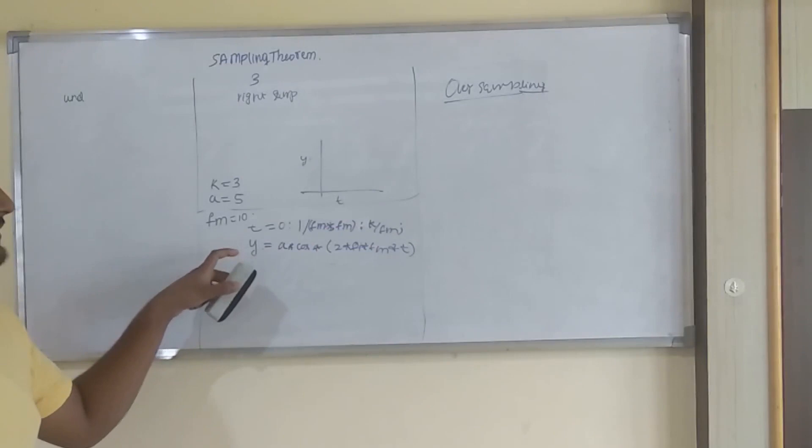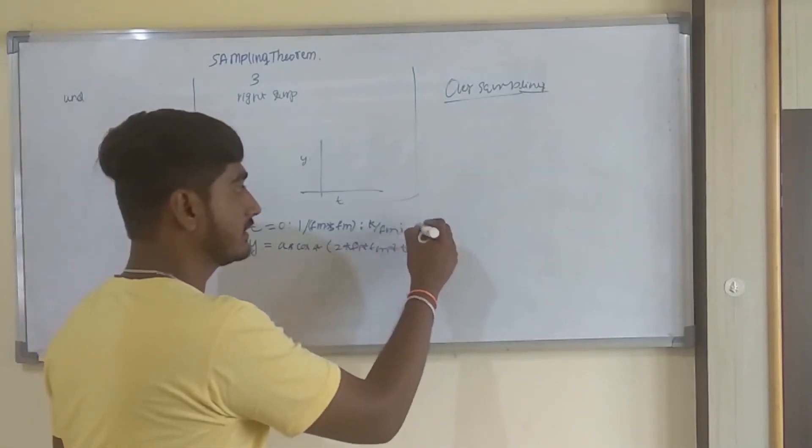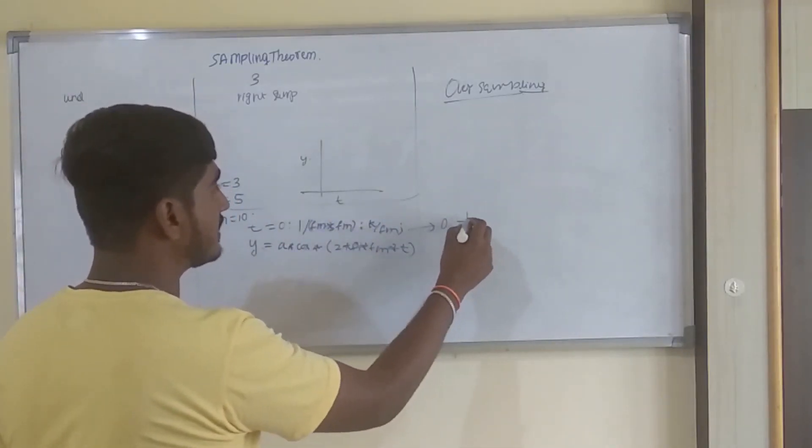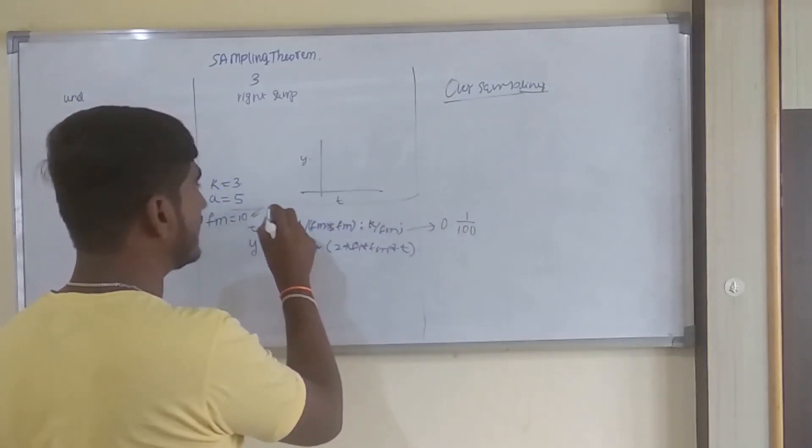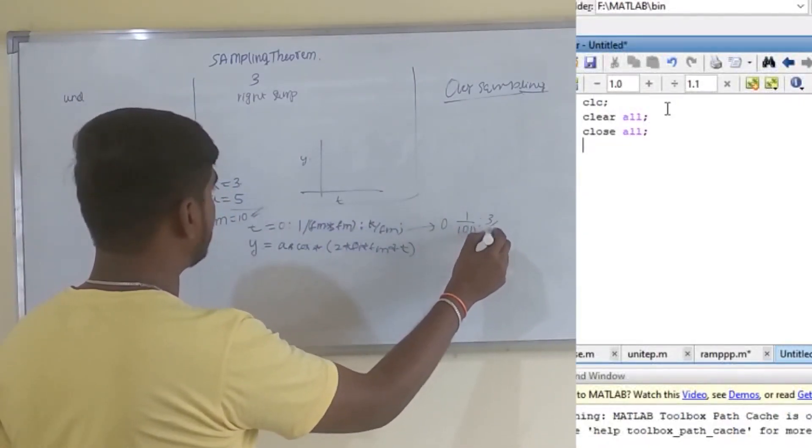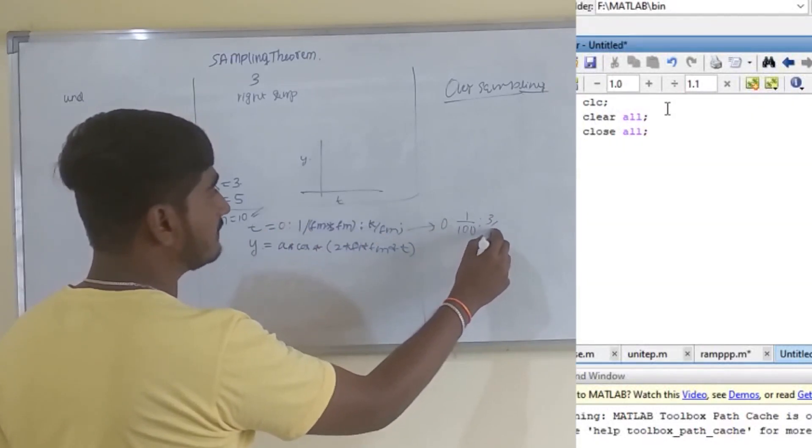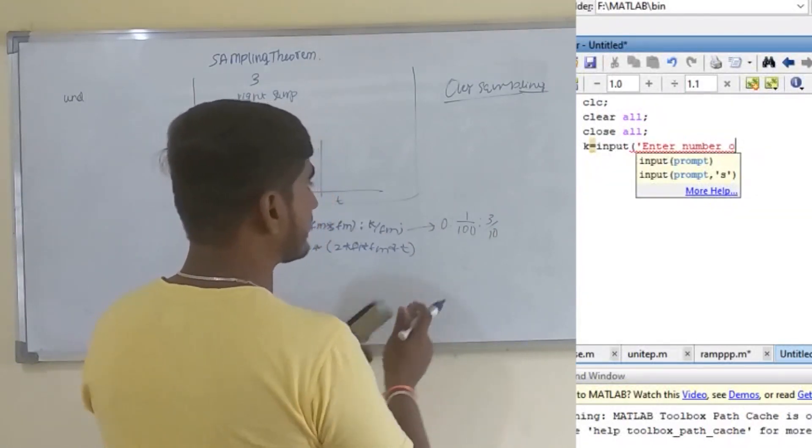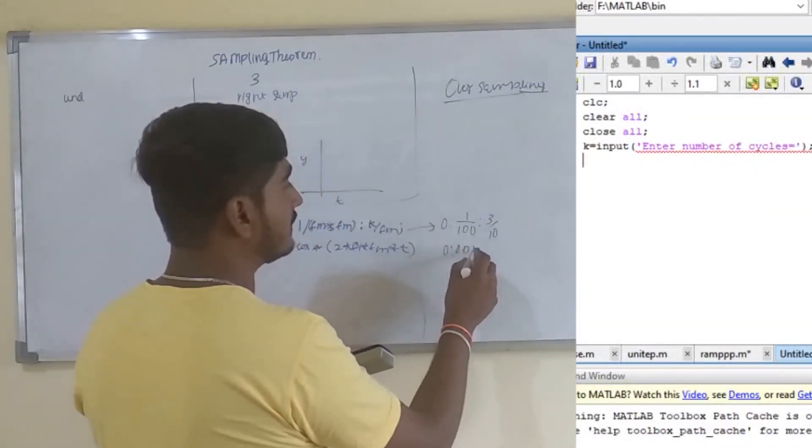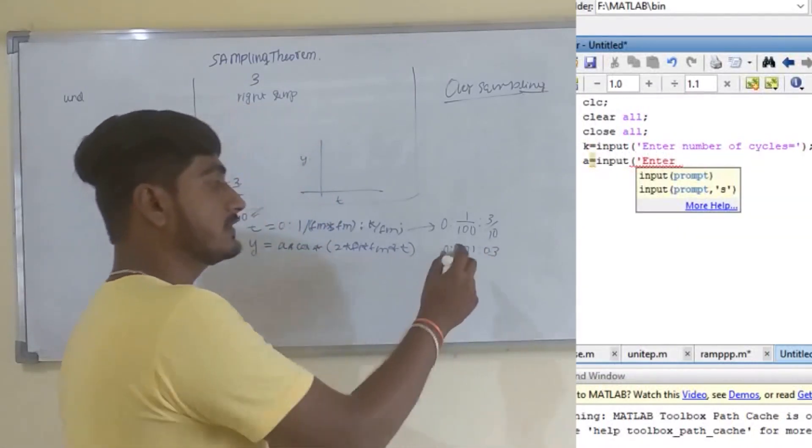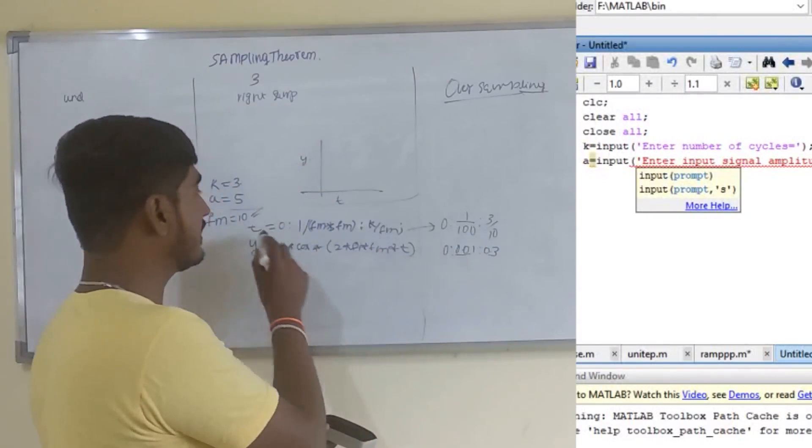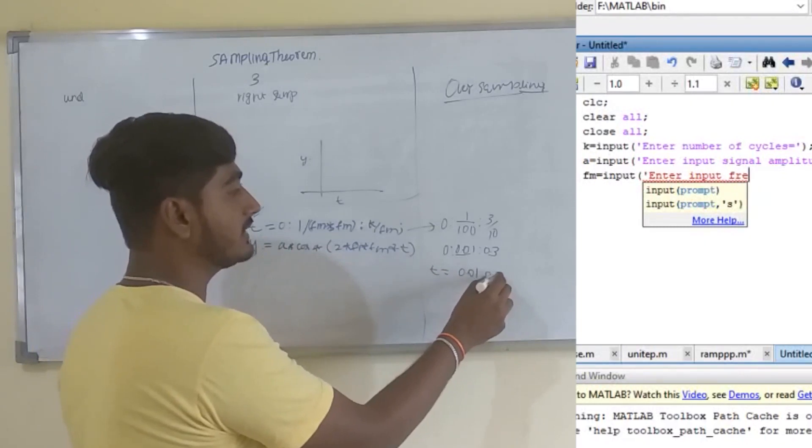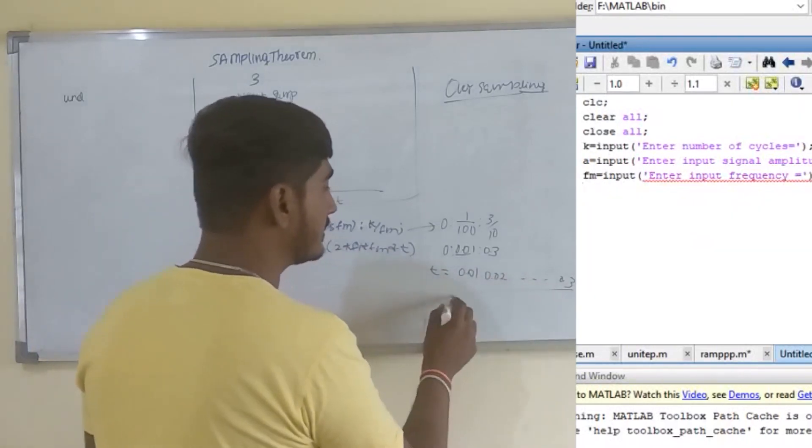We will be defining Y as the input signal: A cos of 2 pi Fm T. As soon as you type, this will be calculated in the following manner. Here you can see, it will take 0 from 0 to 1 by Fm times Fm, 1 by 100 for this value, and K by Fm. 3 by 10 is 0.3. This will be taken 1 is to 0.01 is to 0.3.